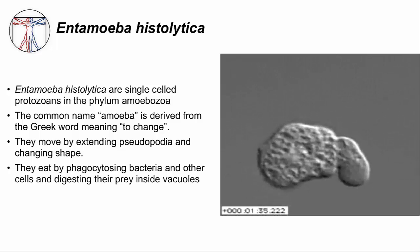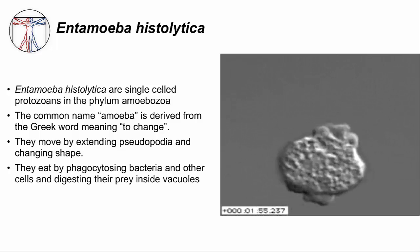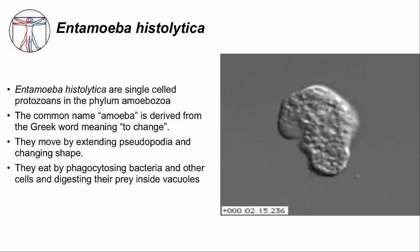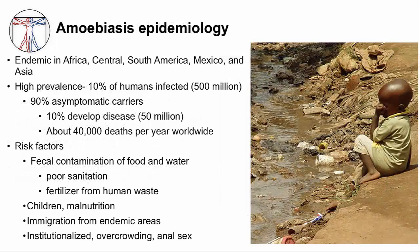Amoebiosis is the name of the disease, and it's very prevalent in developing countries. It's estimated that 10% of humans are infected — that's about 500 million people. Of those, 90% are asymptomatic and only 10% will develop disease. It causes about 40,000 deaths per year worldwide.